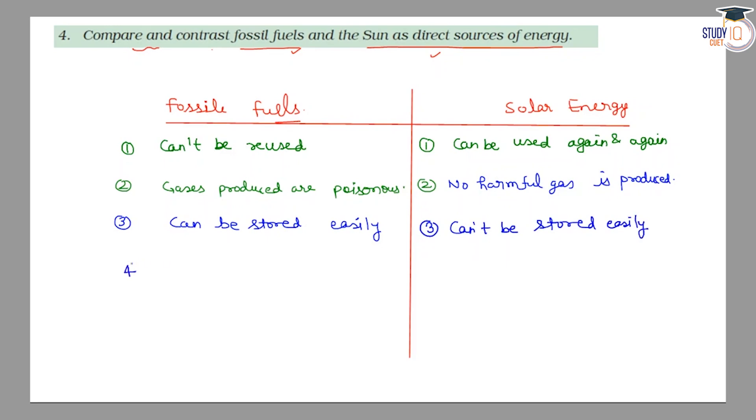Fourth point: fossil fuels can be used at any time. Solar energy, the sun's energy, will be used when the sun comes out. We can write: cannot be used at night.